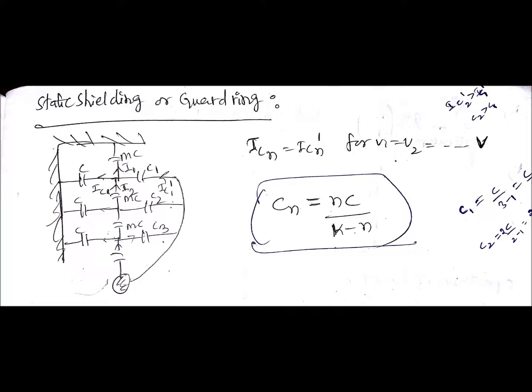What is this K value? The K is the total number of units, the total number of insulators that you have considered. Here it will be 4. That will be fixed. The K is fixed.